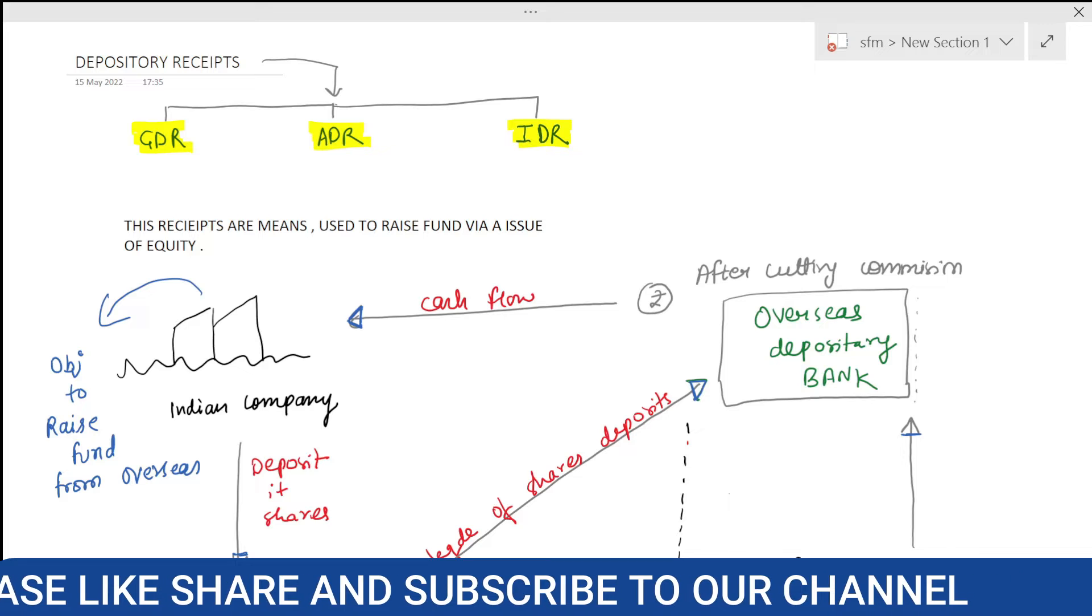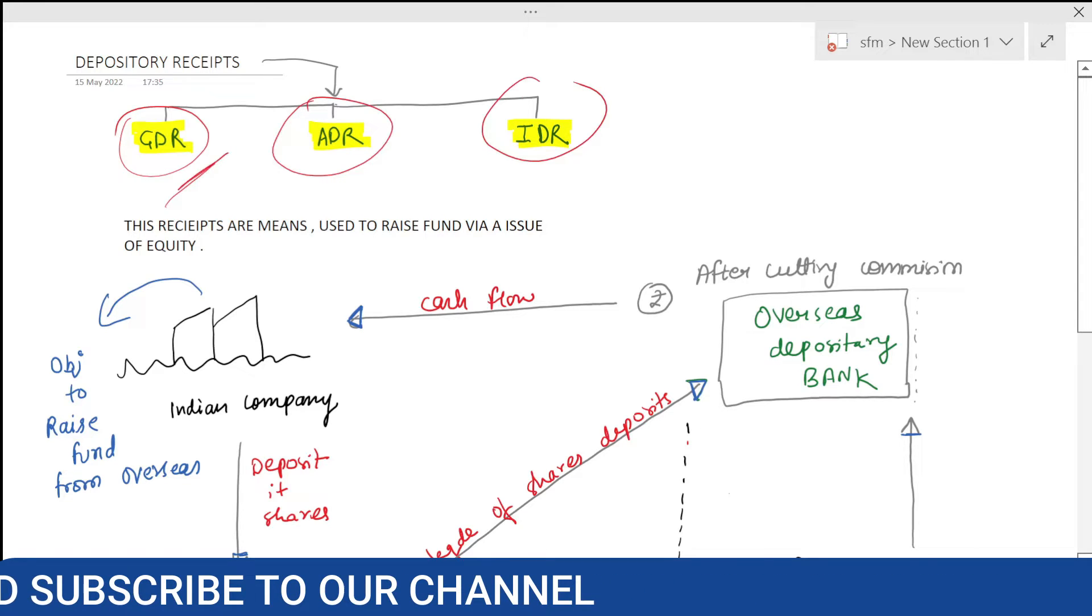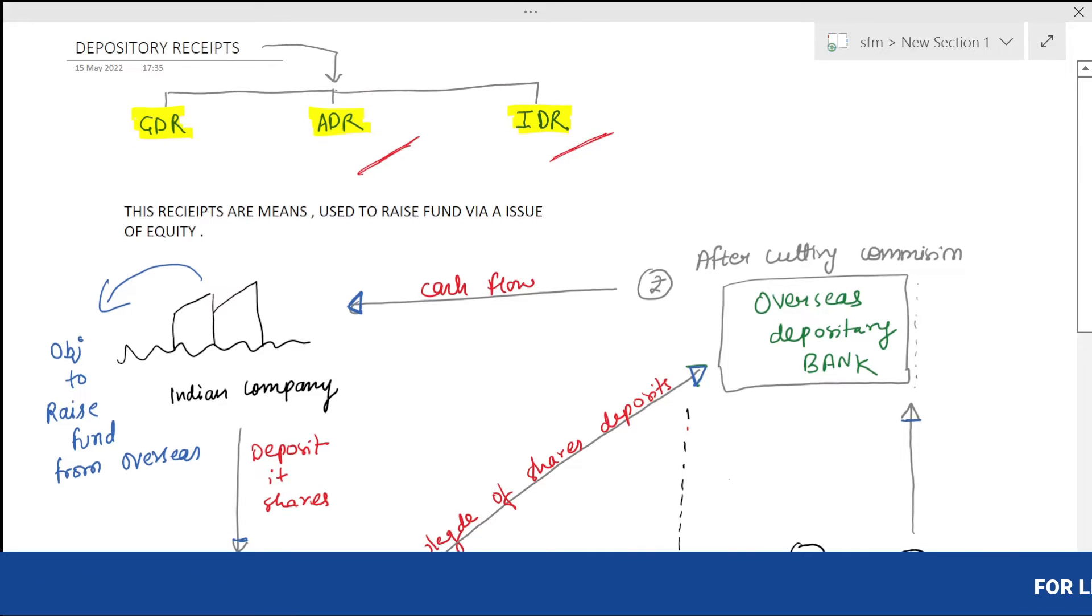GDR, ADR, and IDR. GDR is Global Depository Receipts, ADR is American Depository Receipts, and IDR is Indian Depository Receipts. So let's understand the procedure.